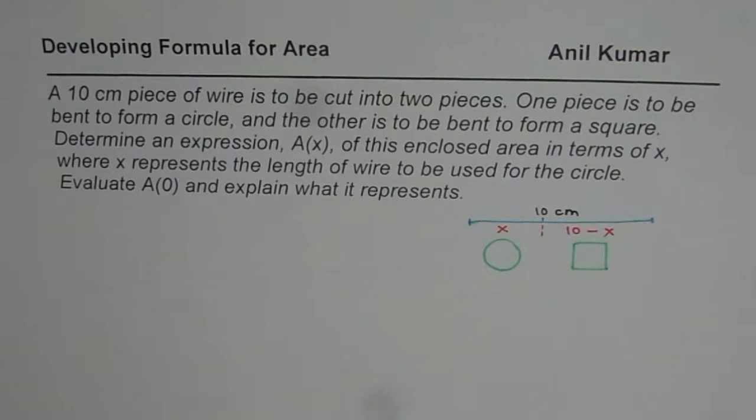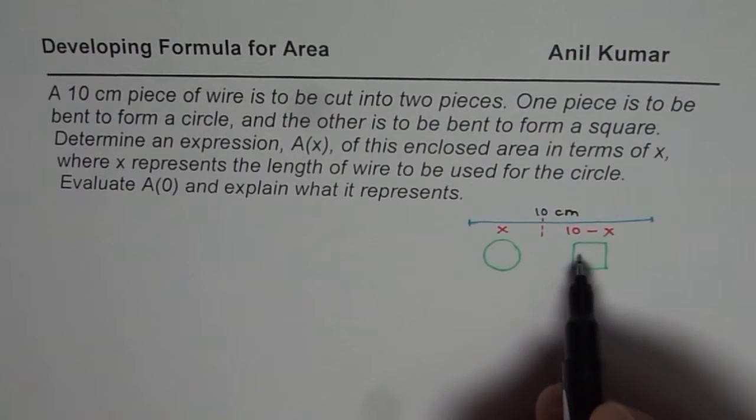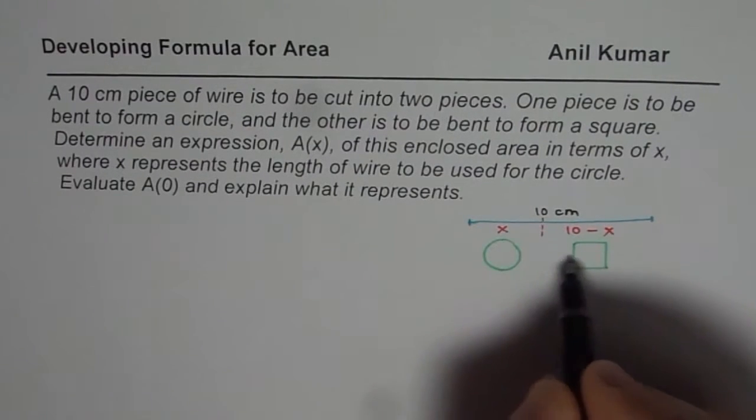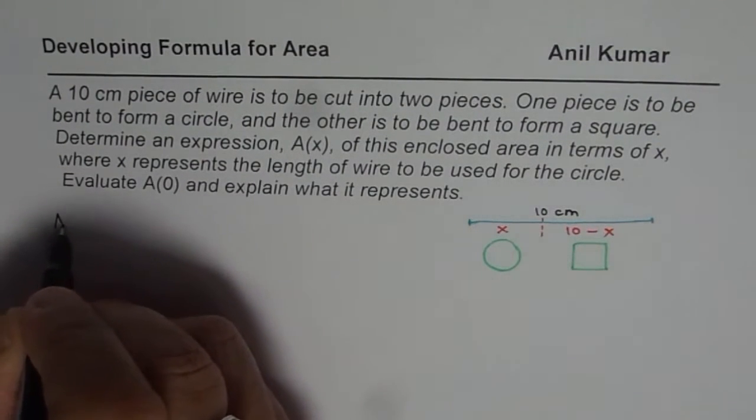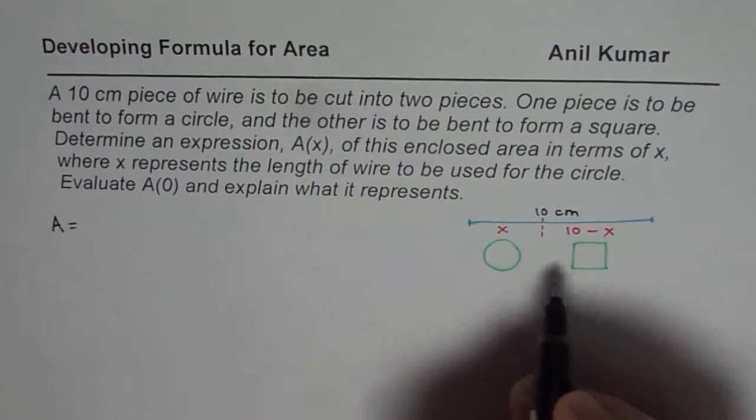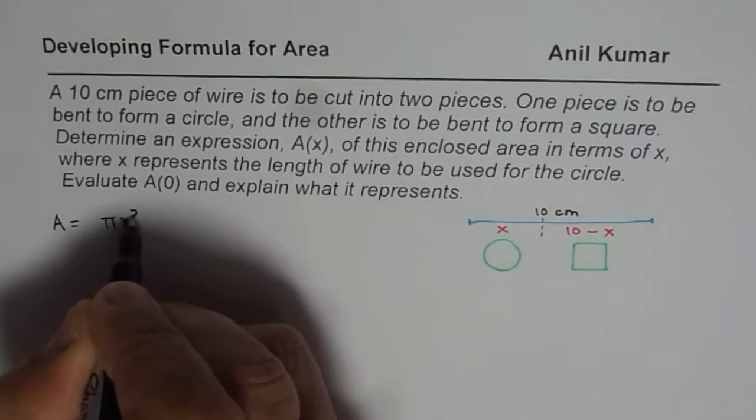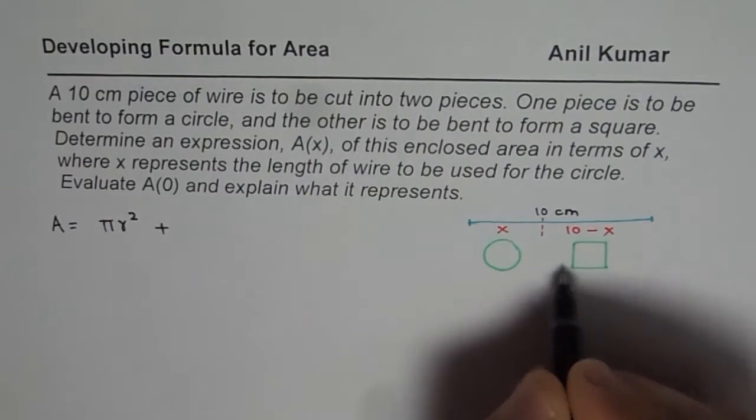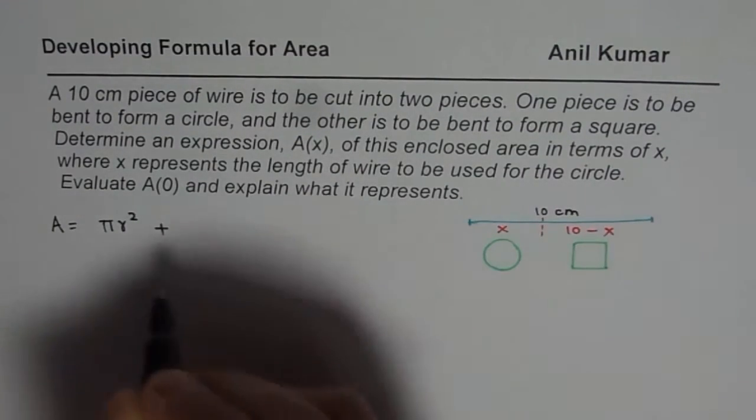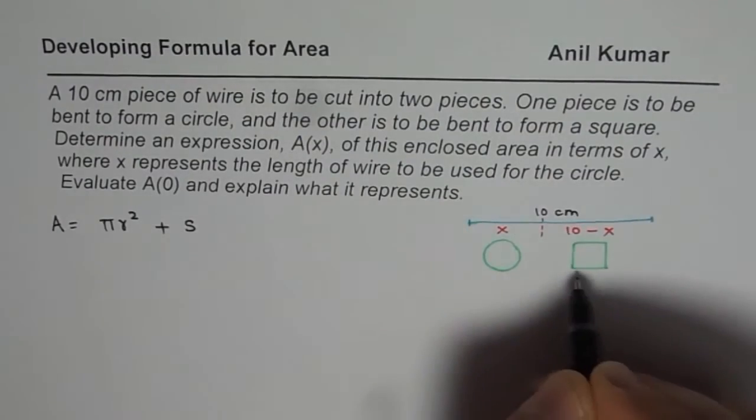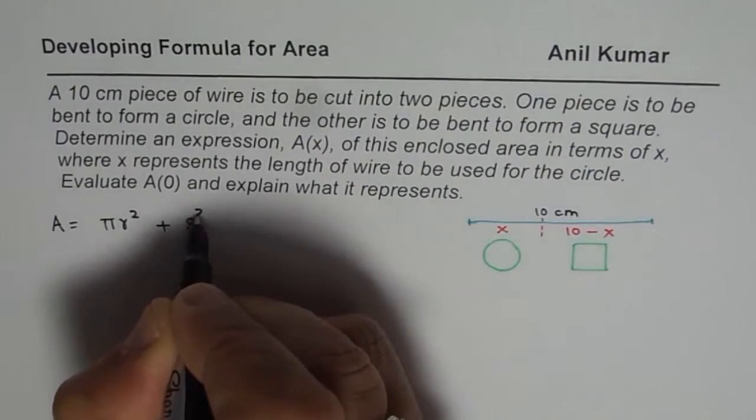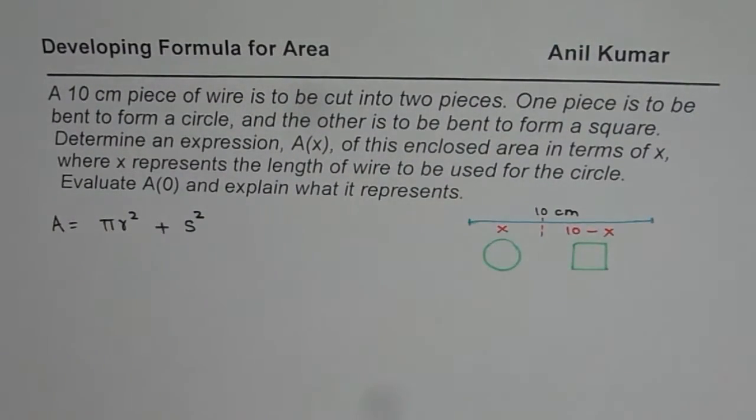What we need to find is an expression for combined area. So area combined will be, for the circle it will be πr². And for the square it will be s², where s is length of each side. So that becomes the area.